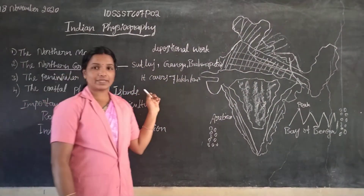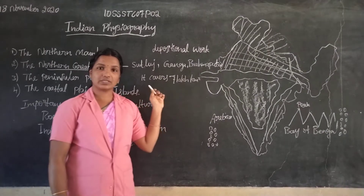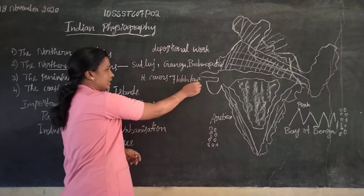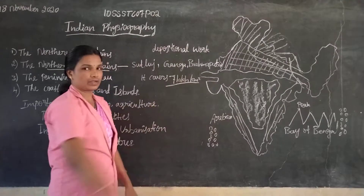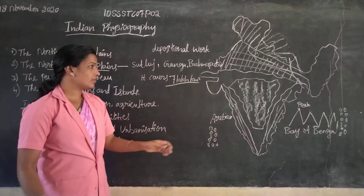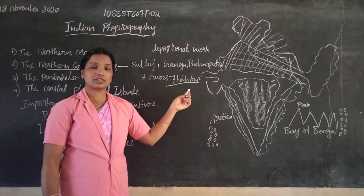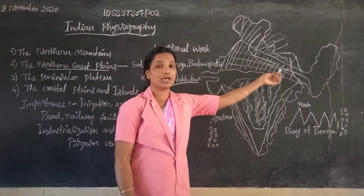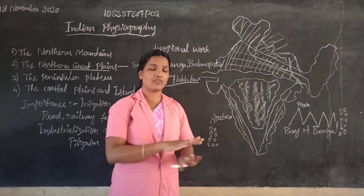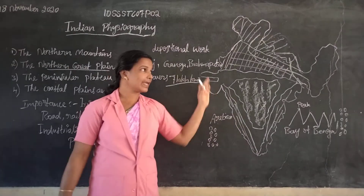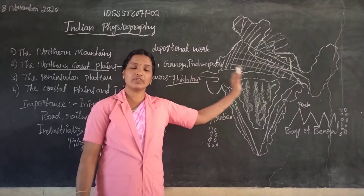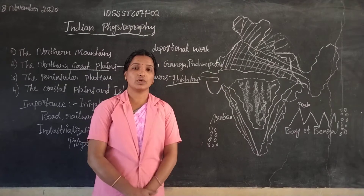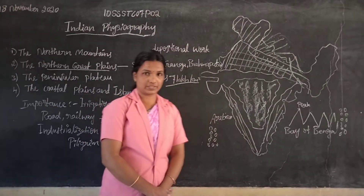How much land is covered with this Northern Great Plain? It covers 7 lakh km². This land is flat, the fertile soil is there, and water facility is there. It is very important for agricultural purposes.